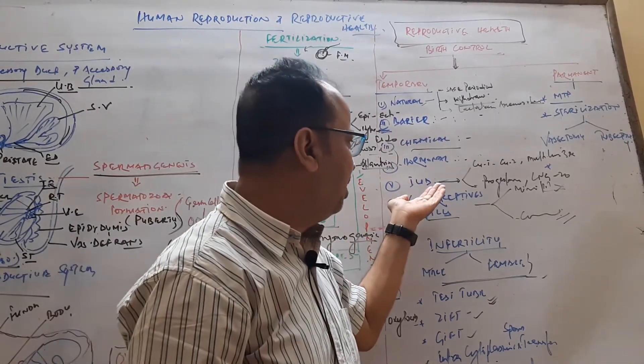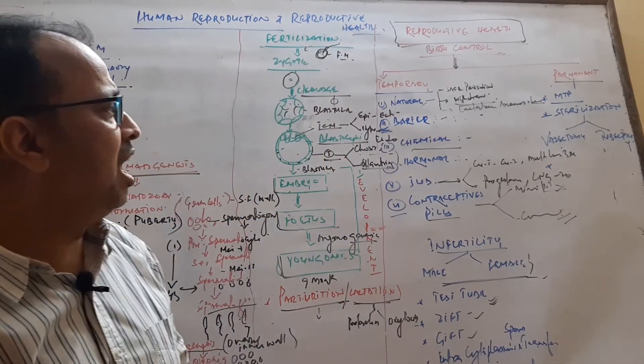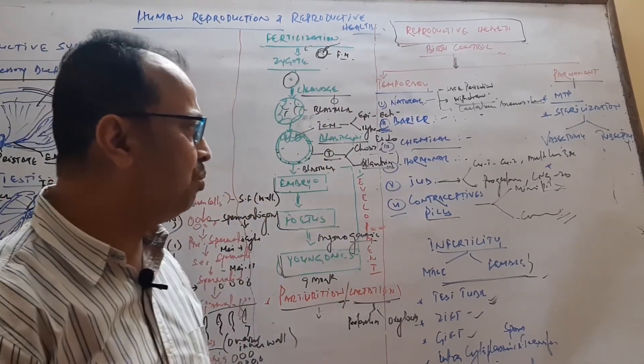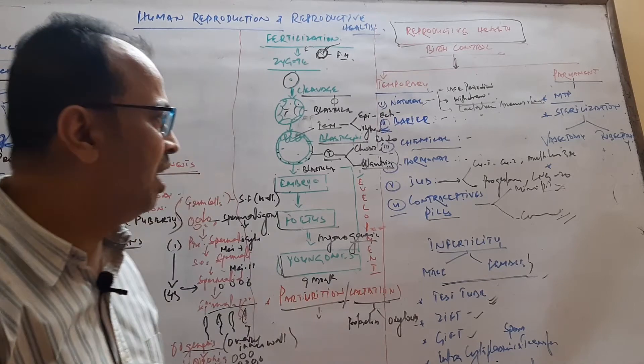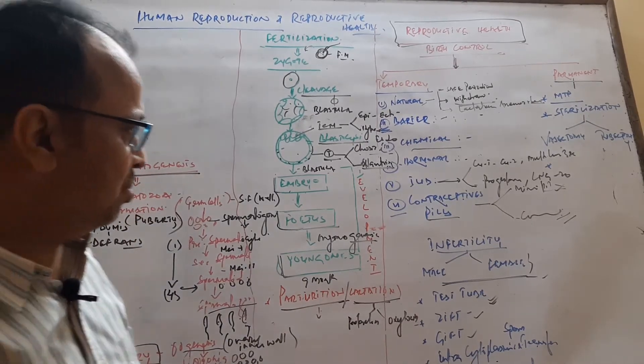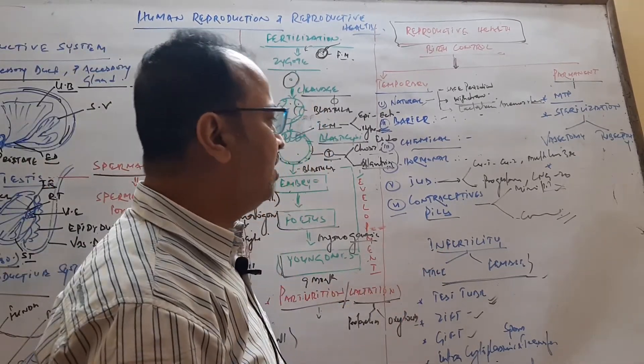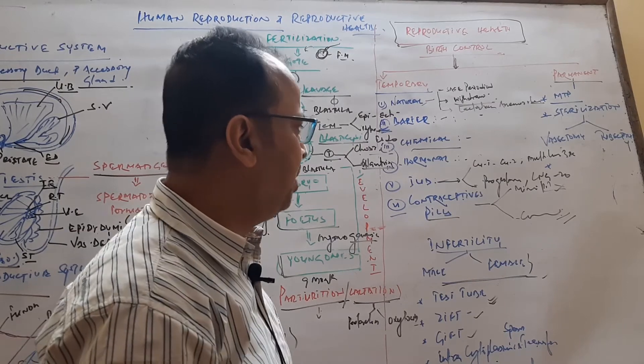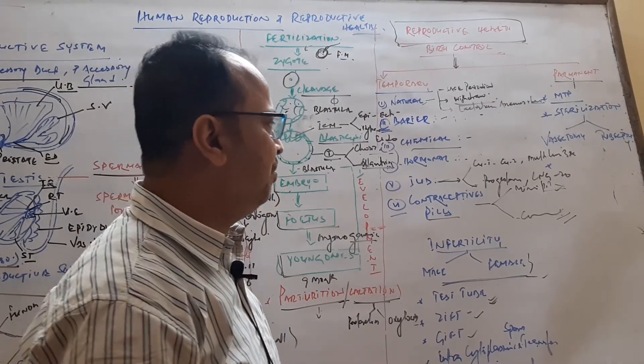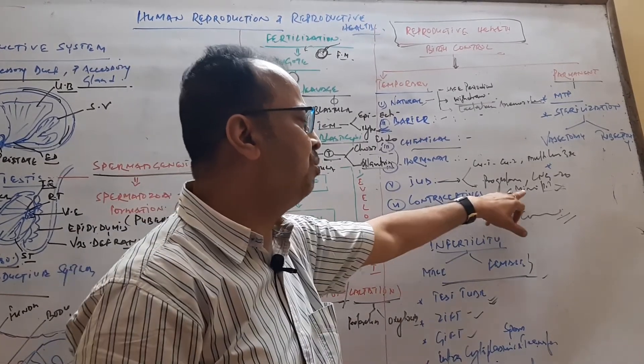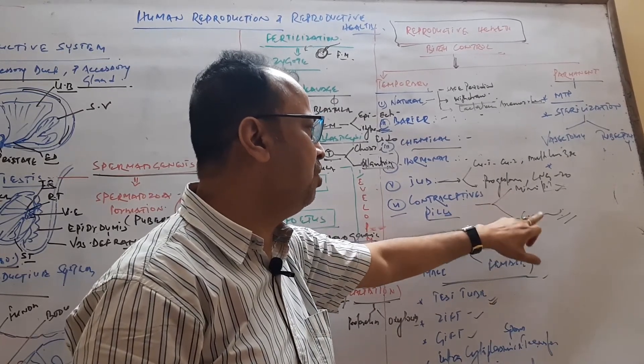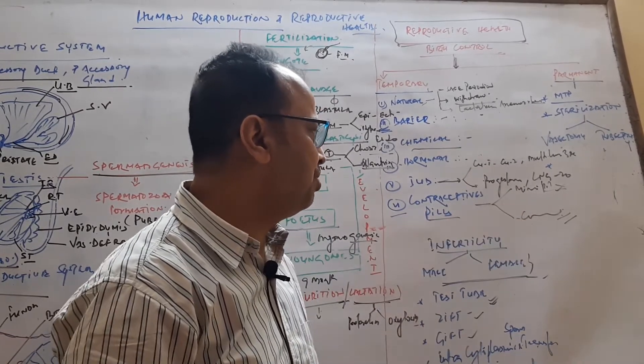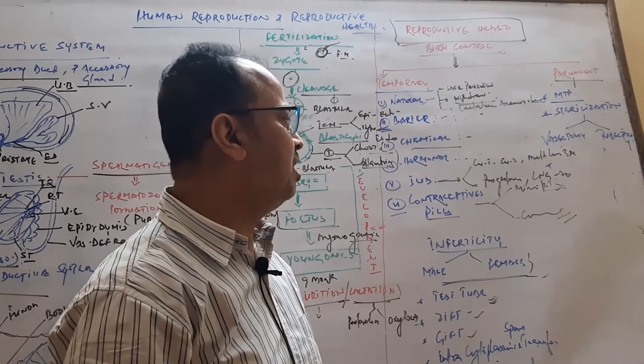Hormonal methods are used to prevent birth. IUD is the most common method in India: copper-T, copper seven, multiload, and progesterone LNG which prevent the implantation process. Contraceptive pills include mini pills and combined pills. Mini pills are taken weekly and contain only synthetic progesterone. Combined pills contain both estrogen and synthetic progesterone. Another type is the emergency pill.